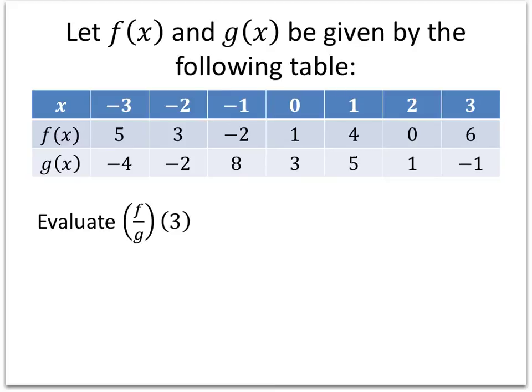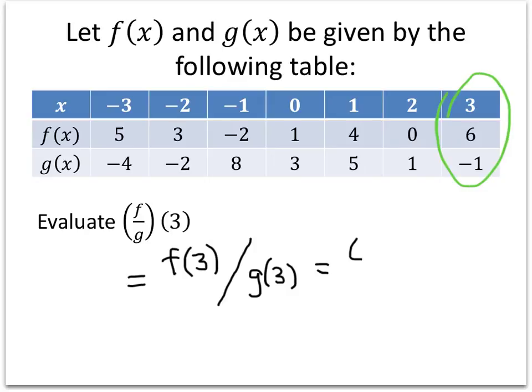One last example, f divided by g of 3. And again, the idea here is that f divided by g is a function. And the rule for f divided by g is you take that thing that you're plugging into f divided by g, and you plug it into f and you plug it into g, and you do that separately. And then you take the two answers that you get and you divide them. We're looking at the x equals 3 column of our table. f of 3 is 6, g of 3 is negative 1, and 6 divided by negative 1 is negative 6.